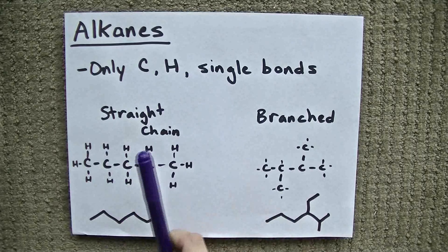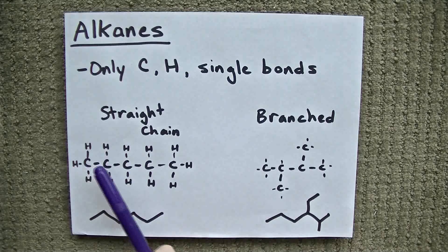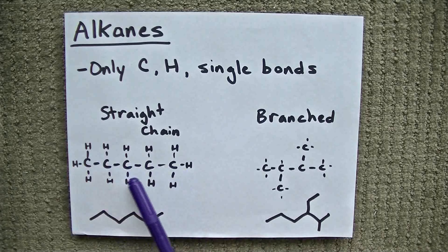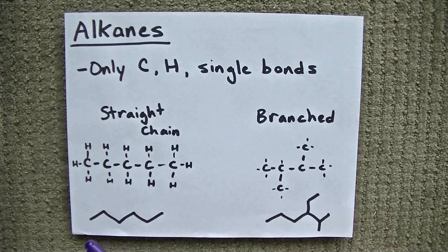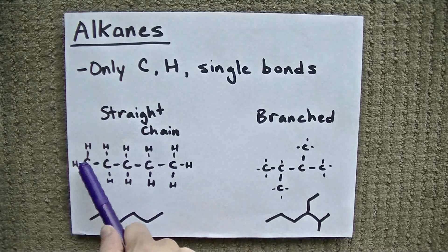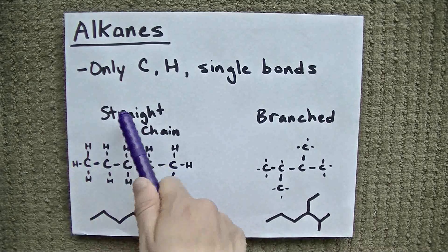There are two versions. There are straight chain alkanes, like this one — carbon, carbon, carbon, carbon, carbon, all in a straight line. It could be bent off to the side, but it's all in one chain, and then surrounded by hydrogens. We have carbon, carbon, carbon, carbon, carbon, carbon, and it's all single bonds. These are called straight chain alkanes, because the carbons go continuously in one straight chain.